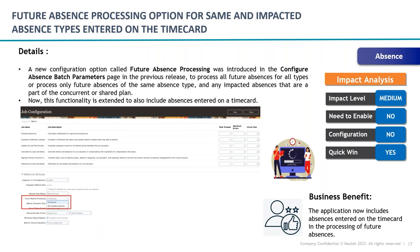Another absence update impacts OTL. In a previous release, Oracle provided a future absence processing option in absence management. That same parameter has now been released in the OTL space as well. If you are using OTL and managing absences there, you can now process future absences on the OTL time card too. This brings absences and OTL in sync with the latest Oracle updates. It's a quick win — directly available out of the box for new time card attributes.